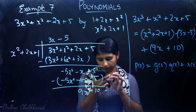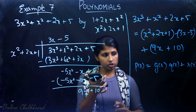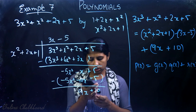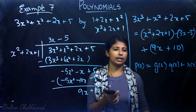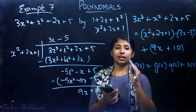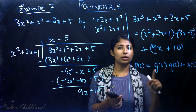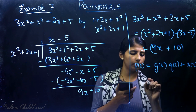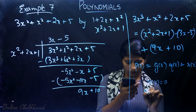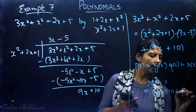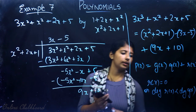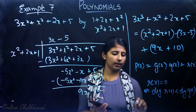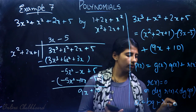The division algorithm for polynomials, given on page 34: if P(x) and G(x) are any two polynomials with G(x) ≠ 0, then we can find polynomials Q(x) and R(x) such that P(x) = G(x)·Q(x) + R(x), where either R(x) = 0 or degree of R(x) is less than degree of G(x). This is analogous to integers: A = BQ + R where 0 ≤ R < B.